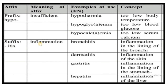The suffix itis means inflammation. For example, bronchitis — where broncho is the root word and itis is the suffix — means inflammation in the lining of the bronchi. Dermatitis is inflammation of the skin, gastritis is inflammation in the lining of the stomach, and hepatitis is inflammation of the liver. So itis means inflammation.